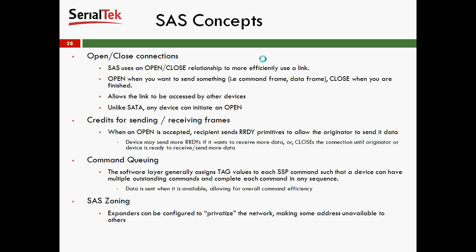There is a concept of open and close connections. SAS uses an open and close relationship to more efficiently use a link. You send an open when you want to send something — a command frame or a data frame — and a close when you are finished, allowing the link to be accessed by other devices. Unlike Serial ATA, where the host and device essentially have a dedicated serial link, this allows other devices or hosts to talk to that device. Credits are needed for sending and receiving frames. When an open is accepted, the recipient sends 'ready' primitives to allow the originator to send data. The host will also send 'ready' primitives so that data can flow back and forth. During a transaction, the device may send more 'readys' if it wants to receive more data, or it will close the connection until the originator device is ready to send or receive more data.